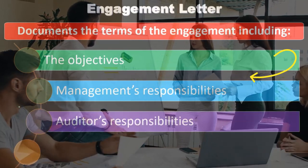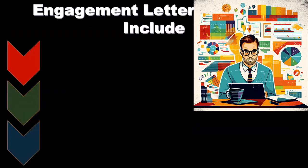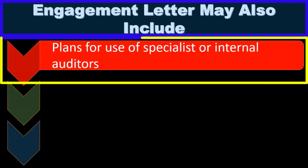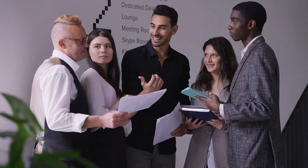The engagement letter should list out the objectives, management's responsibilities, the auditor's responsibilities, and any limitations of the engagement. The engagement letter may also include — beyond the minimum — plans for use of specialists or internal auditors. For instance, if we need a specialist to review the value of certain assets, we may list that in the engagement terms.